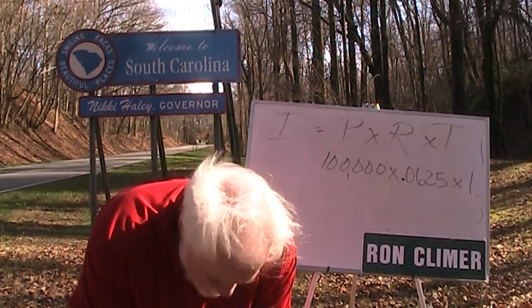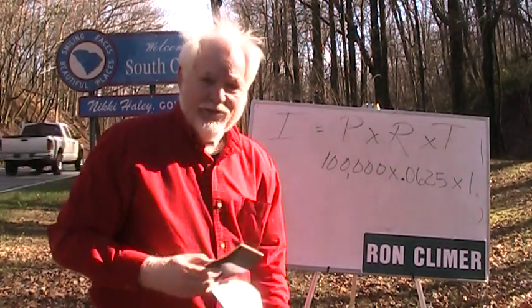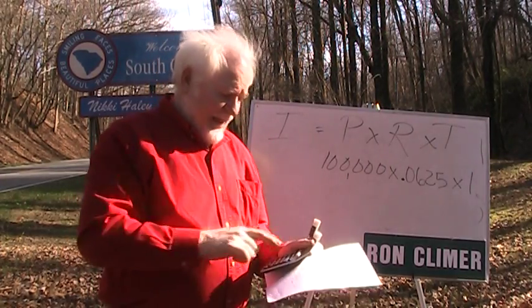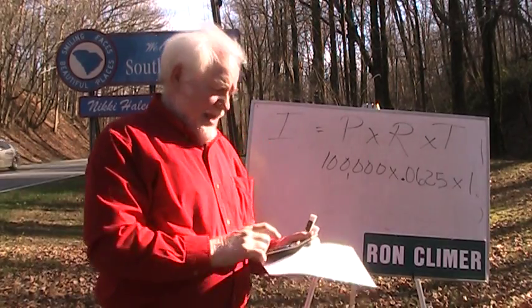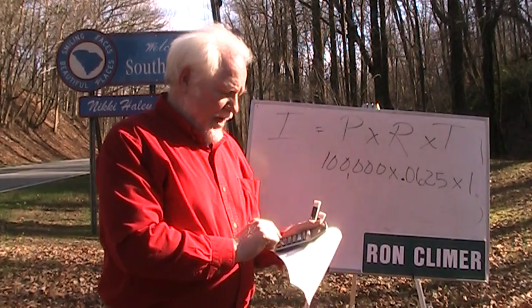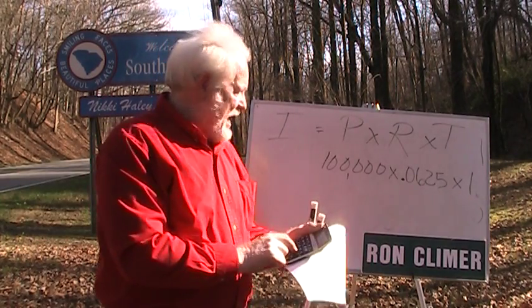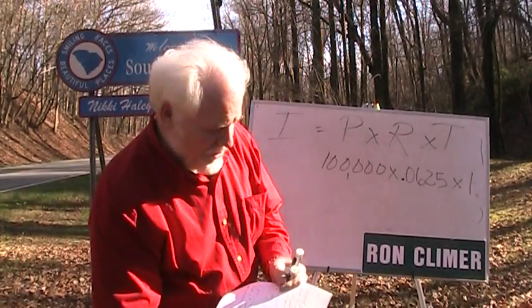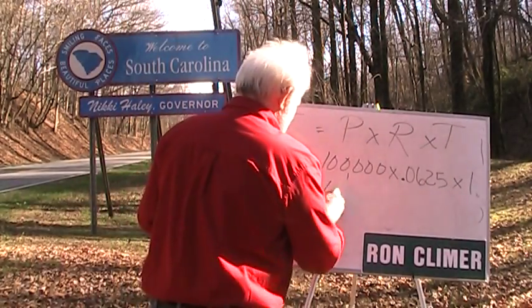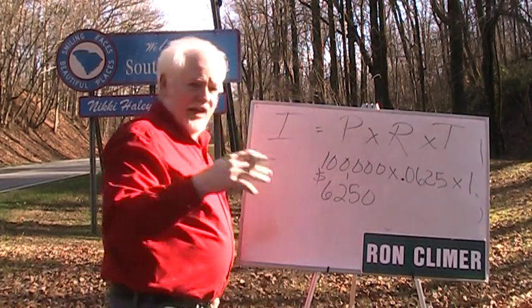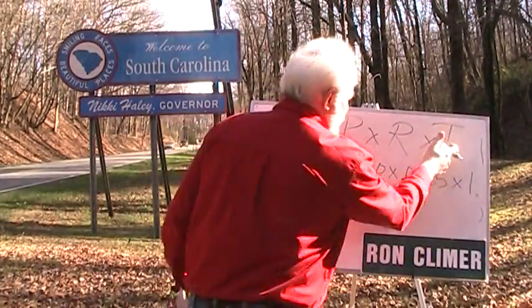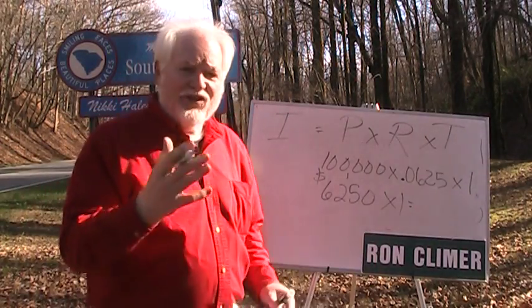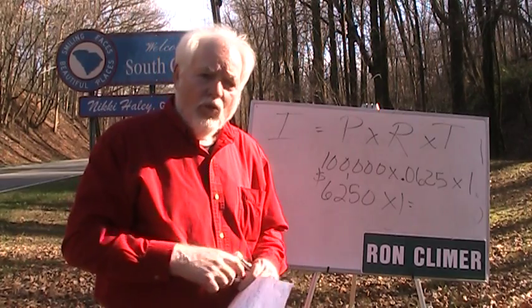If you don't have a calculator — and I don't mean your phone, because they're not going to let you use your phone on the South Carolina real estate exam — get yourself a $10 calculator. $100,000 times .0625 is $6,250. So $6,250 is the interest you'll pay. If we have the money for one year, that's times one, and any number times one is that number. So you're going to pay $6,250 in one year.